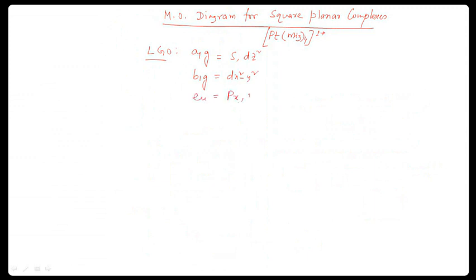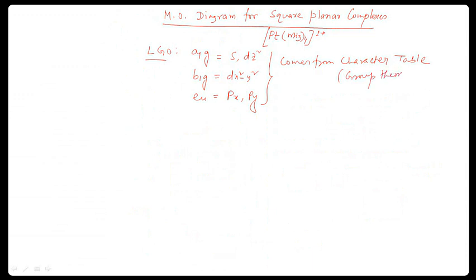For CX and CY orbitals, okay. This comes from the character table. This object comes from the character table. That is from group theory — group theory, character table. These are the orbitals.